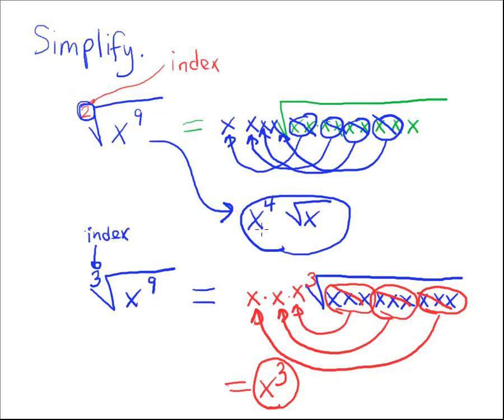Again, it was the exact same problem, but a square root here. I had four groups of x's come out, so that's x to the fourth, and one lonely x left inside. Again, I don't really need to write the 2 here, because that's understood as the index. Hope that helps.